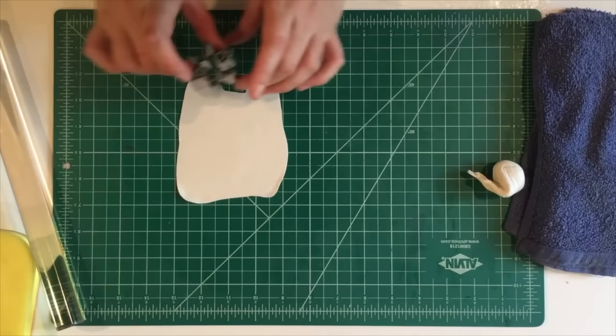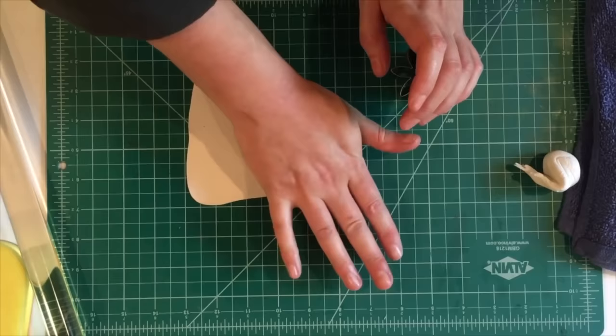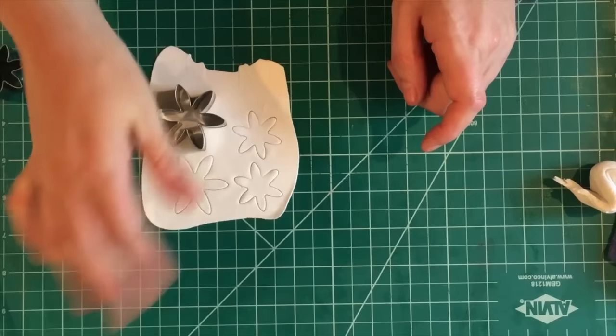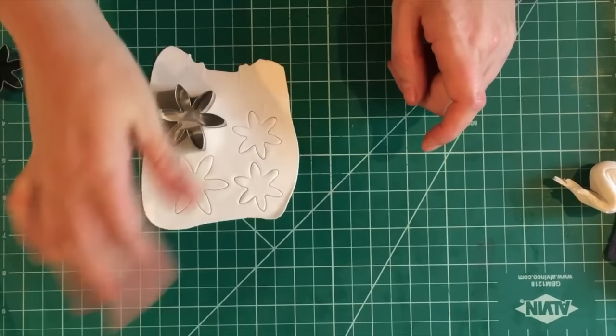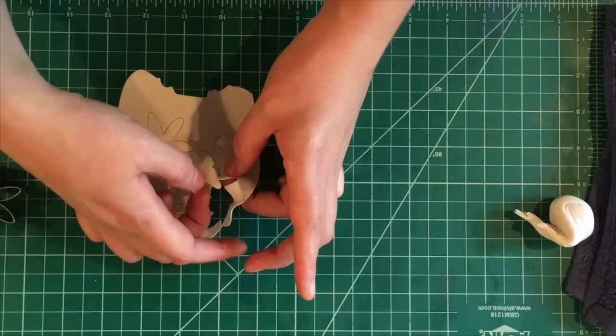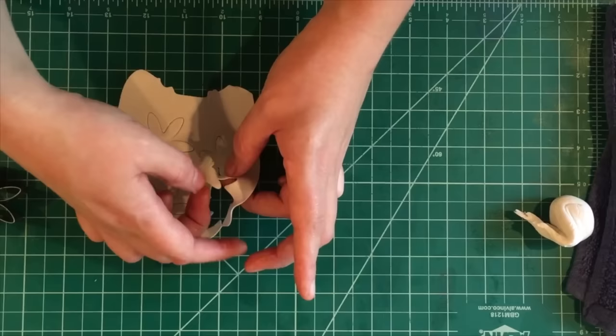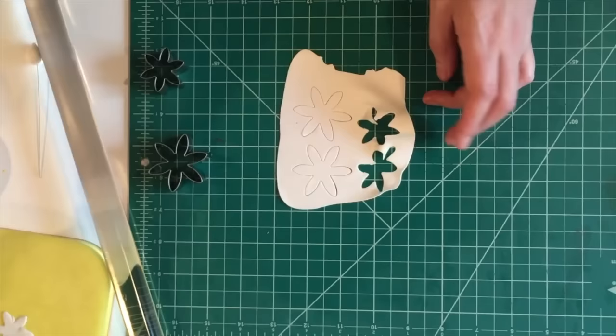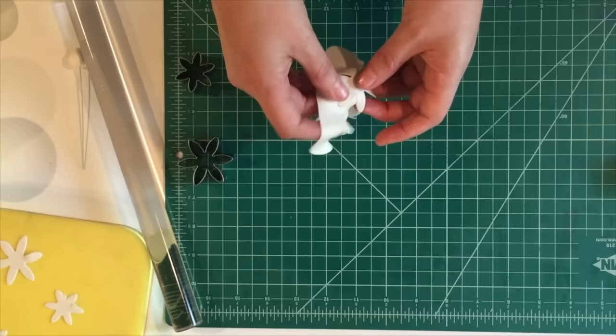Using the star shaped cutters, you want to do two of each. And especially when you get into really detailed cutters like these, I always like to cut them on a self-healing mat because it gives you a cleaner cut.